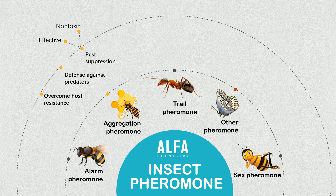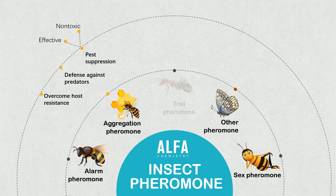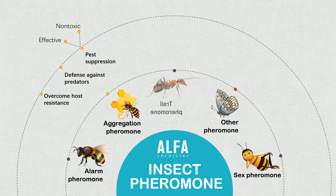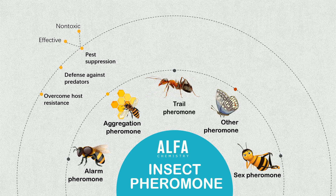Social insects commonly use trail pheromones. For example, ants mark their paths with pheromones consisting of volatile hydrocarbons. This trail attracts other ants and serves as a guide.